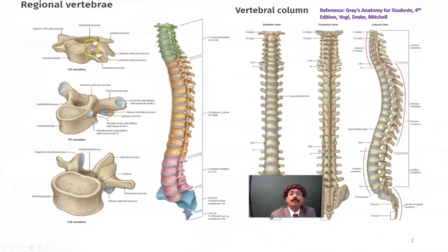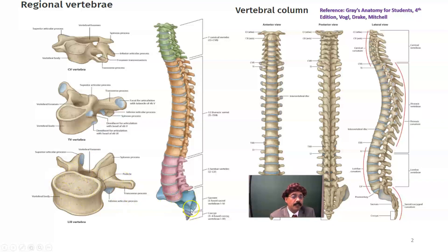These are the vertebrae. The cervical vertebra has the transverse foramen and spinous process. The thoracic vertebra has costal facets. The lumbar vertebra has no costal facets, no transverse foramen, and a massive vertebral body. This is the sacrum, with its spinous processes. We are learning structures present at the level of the spinous processes because the spinous process is palpable, which gives us an advantage to locate the viscera and structures.